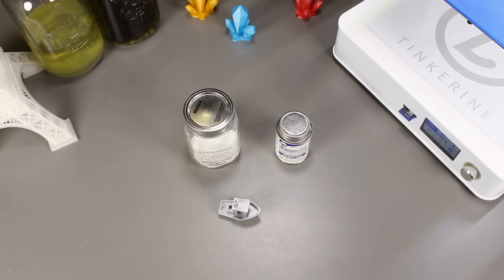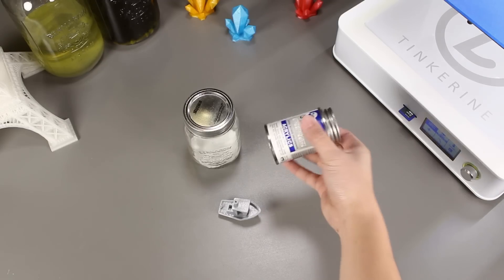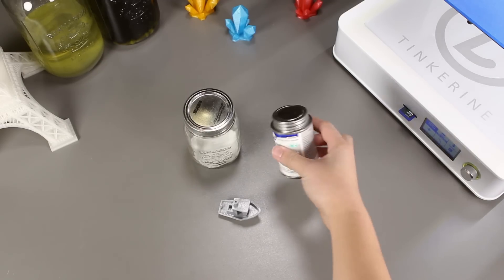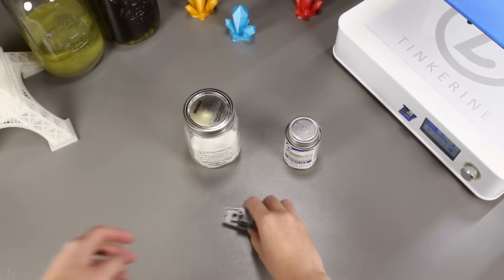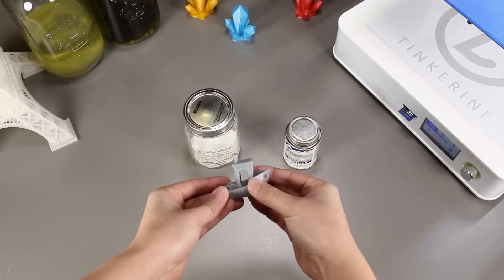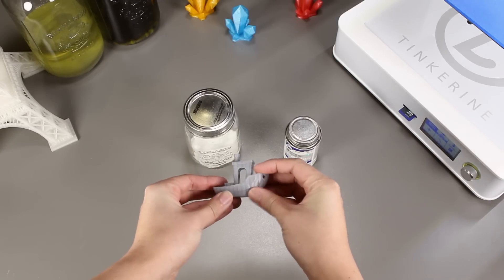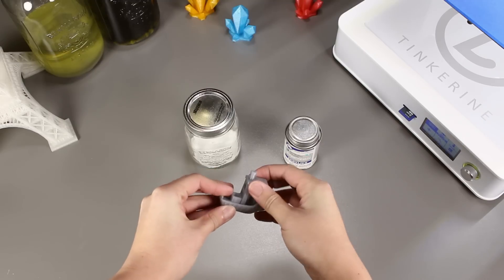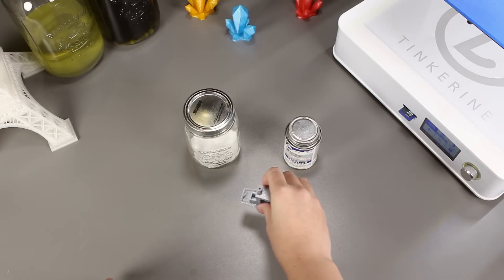Well there we have it. We tried vapor smoothing with methylene chloride and it doesn't work. What it does do is it makes the infill a lot more apparent and bumpy and also gives the rubbery texture like acetone. But it did not achieve the smoothing of the surface that we wanted.